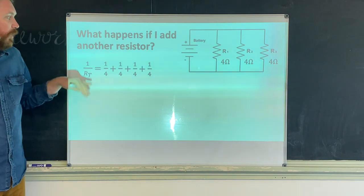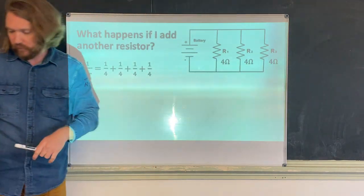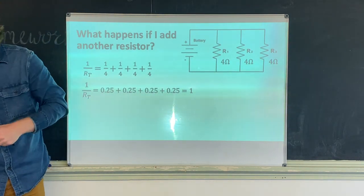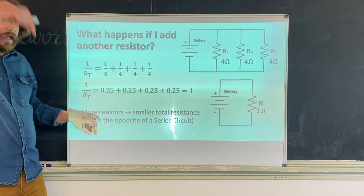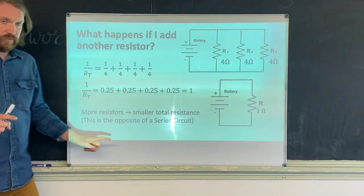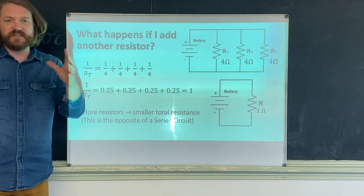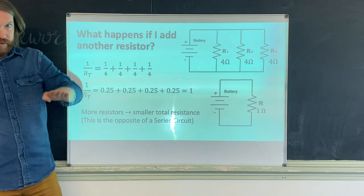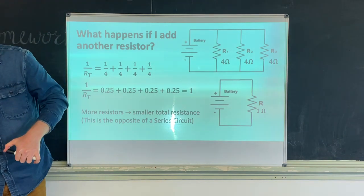When you add more resistors to a parallel circuit, the total resistance goes down. If I add a fourth resistor, 1/R_total equals 1, and total resistance drops further. This is very important: the more resistors in parallel, the smaller the total resistance — the opposite of a series circuit. So if a question asks which has the most resistance: more resistors in parallel means lower resistance; more resistors in series means higher resistance.